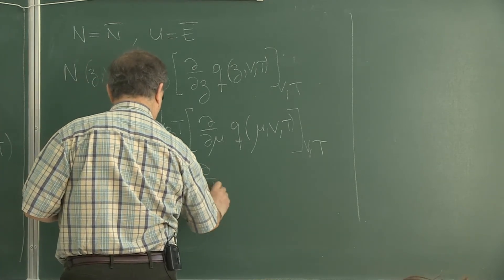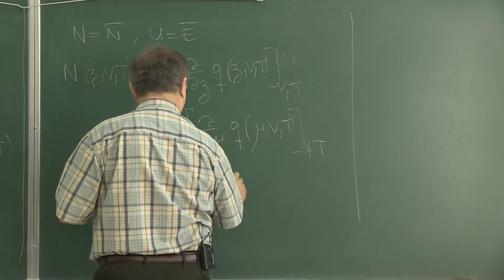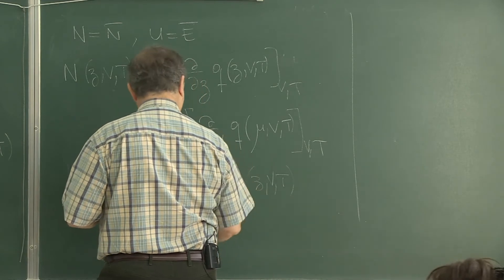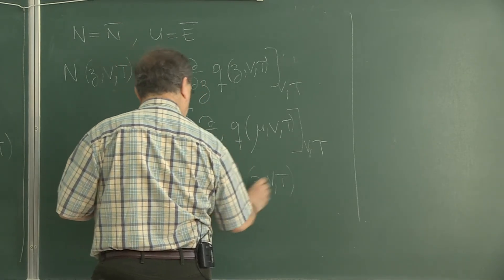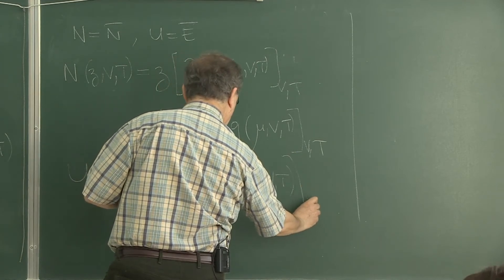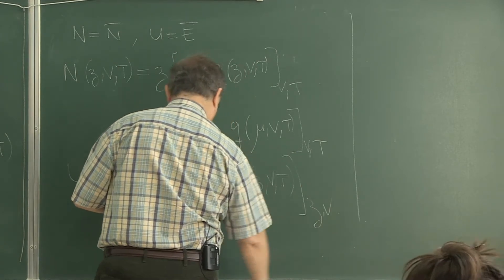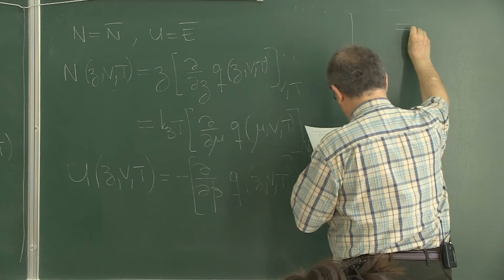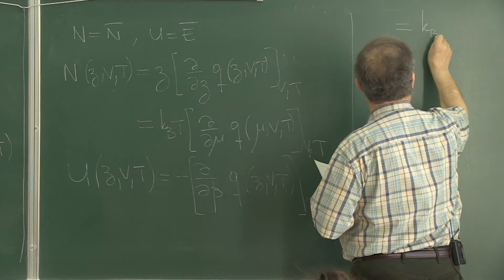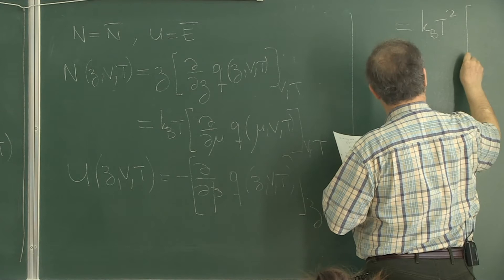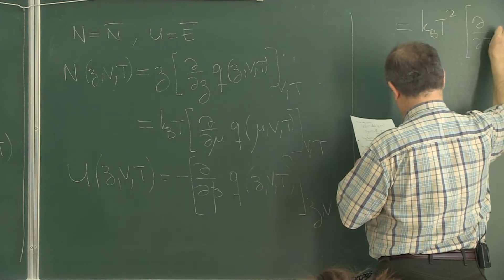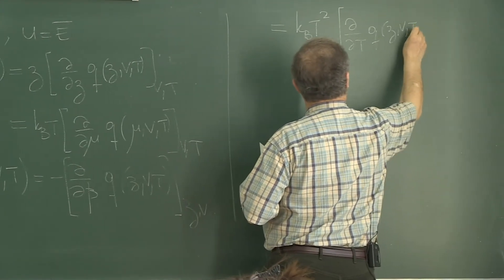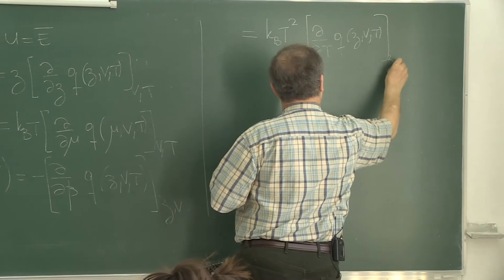The energy comes out to be minus β times Q(z,V,T), and the derivative is taken keeping z and V constant. Or that is equal to k_B T squared times the derivative with respect to temperature of Q(z,V,T), keeping z and V constant.